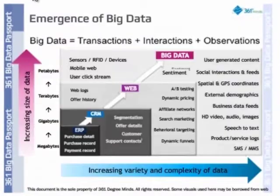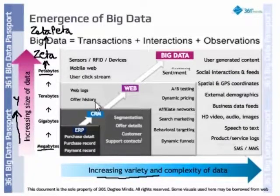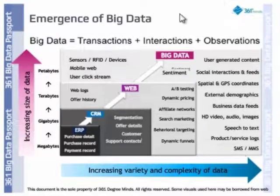The emergence of big data in the context of business processes: we're starting off with megabytes and at the top we're talking about petabytes. Other than volume, velocity, and variety, let's look at what's triggering them all off. Transactions are triggering them off, interactions are triggering them off, and observations are triggering them off.